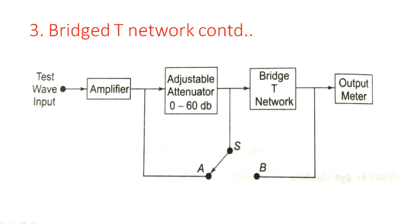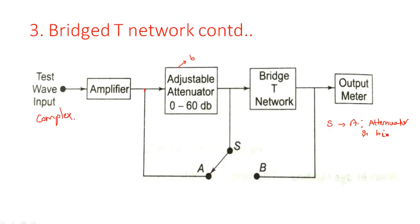Let us see how this fundamental suppression is used in an application. We give any type of waveform as a test waveform — let it be a complex waveform having a fundamental as well as harmonics — which is amplified and given to this network. Initially, at the first position, the switch is connected to A. When the switch is connected to A, the adjustable attenuator is bypassed, meaning the entire signal passes directly to the input of the bridge-T network.